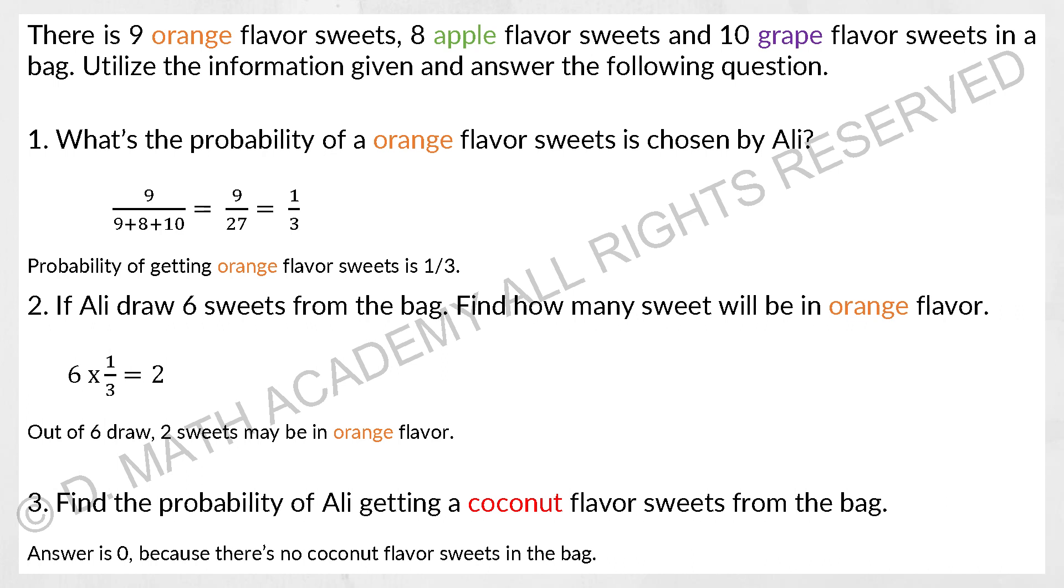For the next one, if Ali draws six sweets from the bag, how many sweets will be in orange flavor? So simply take the probability that you have gotten, multiply by the six, then you will get two. And for the third one, find the probability of Ali getting a coconut flavor. Since there's no coconut flavor there, the probability will be zero.